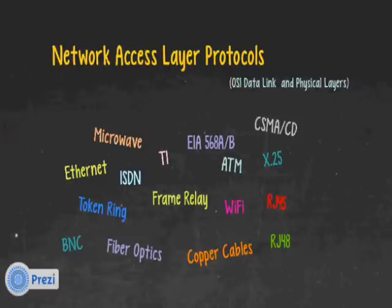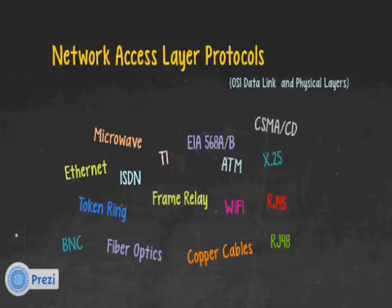Those are wide area network protocols. We also have Wi-Fi in all its different flavors, Ethernet, and the older token ring protocol — which is also obsolete, died in the 90s. Lower-level ones include microwave and fiber optics, and we describe things like copper cable, RJ48, RJ45, BNC connectors. We even have standards for the color code of wires when creating an RJ45 connector for Ethernet: EIA568A and EIA568B.